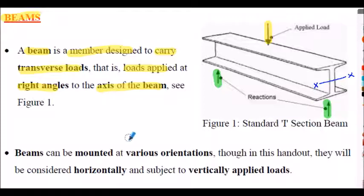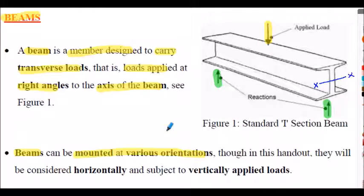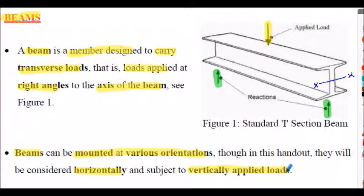Beams can actually be mounted at various orientations — they can be vertical or on an incline. But we're going to consider them to be horizontal in this work, and all loads are vertically applied. We're keeping it straightforward for this lecture: all loading is vertical to the beam and all beams are horizontal.